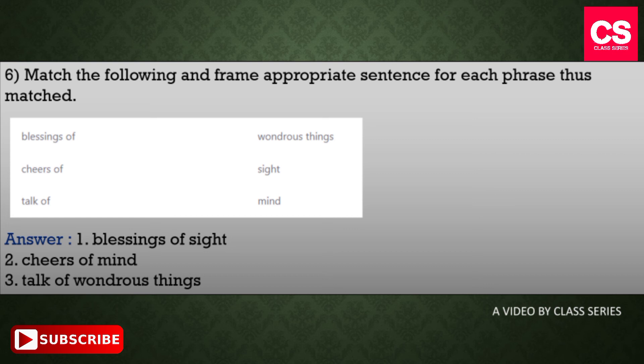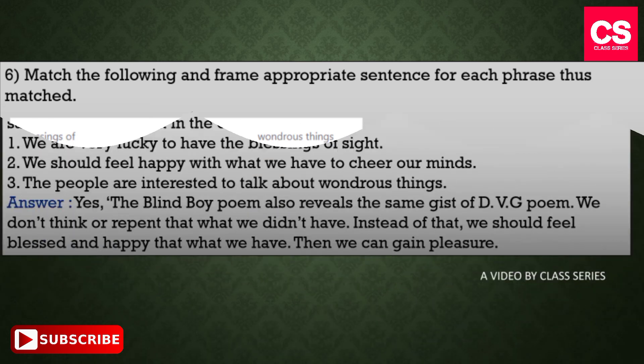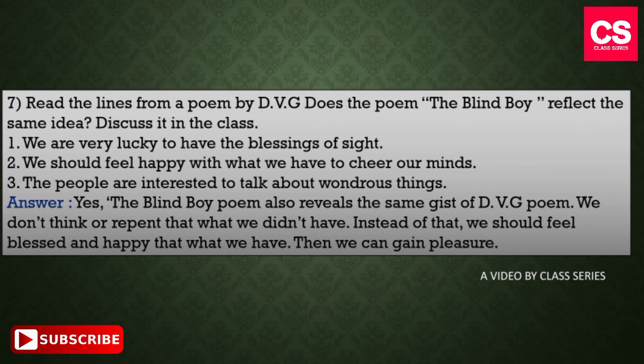Our last question is: Read the lines from a poem by D.V.G. Does the poem The Blind Boy reflect the same idea? Discuss it in the class. In your textbook the lines are given in Kannada, but in this video we have taken it in English. The lines are: Number 1: We are very lucky to have the blessings of sight.